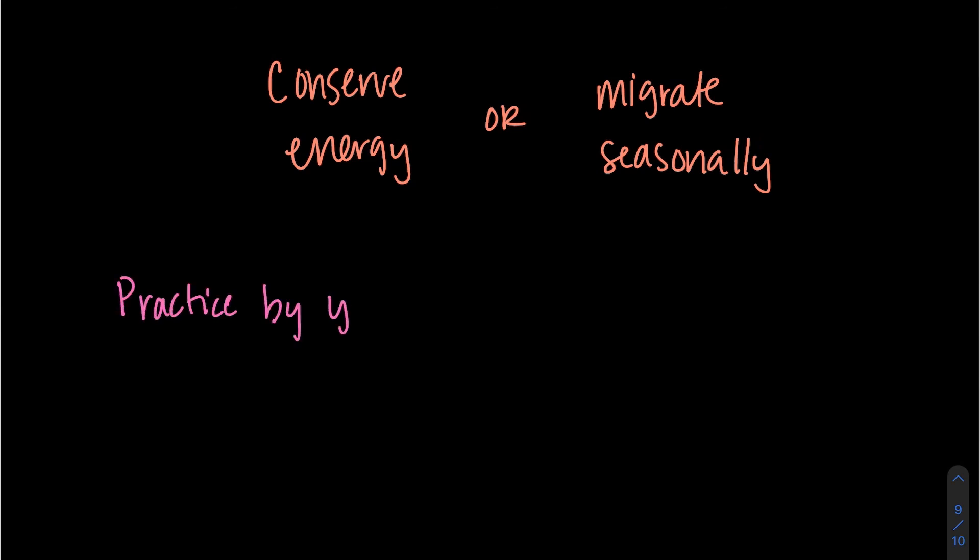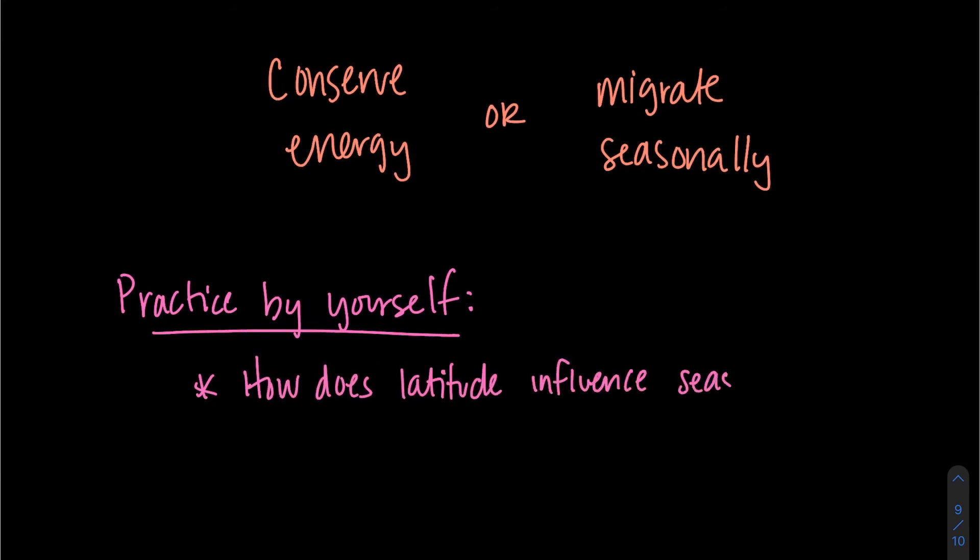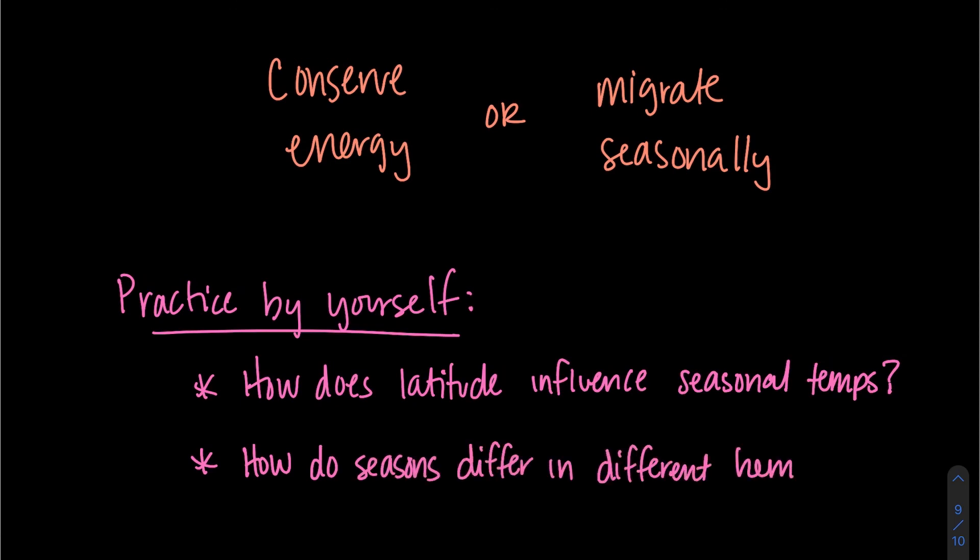So what observations can we make based on our takeaways? Well, now we can determine how latitude may influence seasonal temperature. How does the northern hemisphere differ from the southern hemisphere? And we can determine that northern and southern hemisphere experiences can be similar and different.